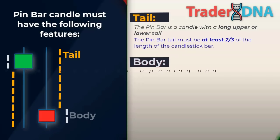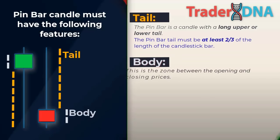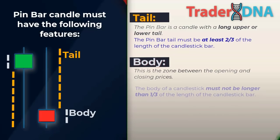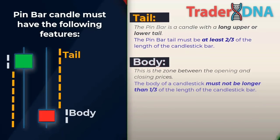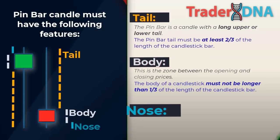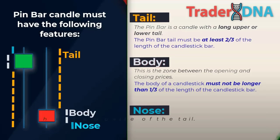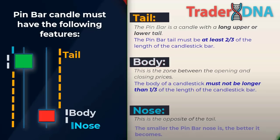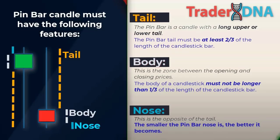The body of a pin bar is the zone between the opening and closing prices. It must not be longer than one-third of the length of the candlestick bar, and the opening and closing prices of adjacent bars should be close to each other or equal. The pin bar nose is the opposite of the tail. A pin bar does not necessarily have a nose — sometimes it opens and closes right at the closing price. The smaller the pin bar nose, the better.